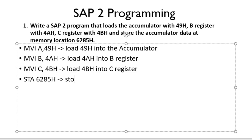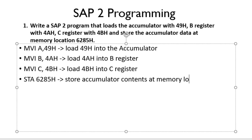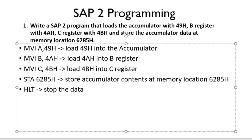This STA instruction will store the accumulator content at memory location 6285H. Now we have loaded the contents into respective accumulated registers and done our job. We need to stop the program. To stop the program, we have the SIP2 instruction HLT. HLT will stop the data processing.